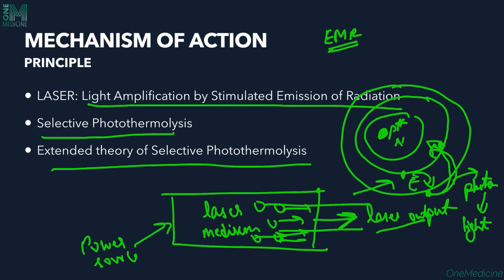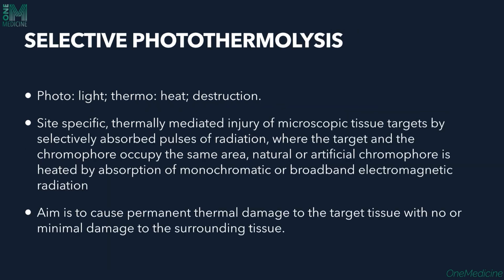That is the light amplification by stimulated emission of radiation — we give the power source to excite these electrons, and when they return back they release photons, which is then used for treatment. There is also selective photothermalysis, which basically says only the target has to be destroyed. The targets in the skin for laser would be water, hemoglobin, and melanin — these targets are the chromophores on which the laser light acts.